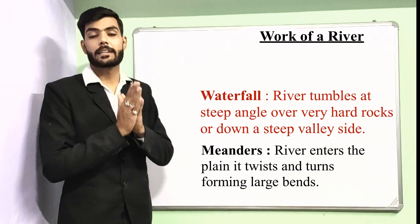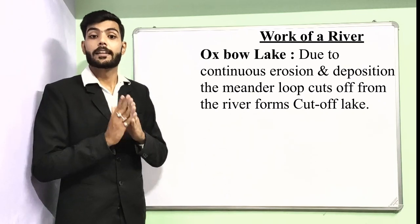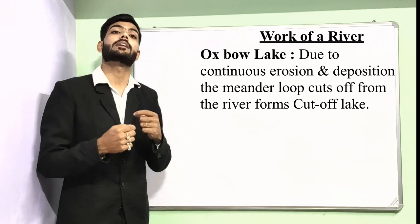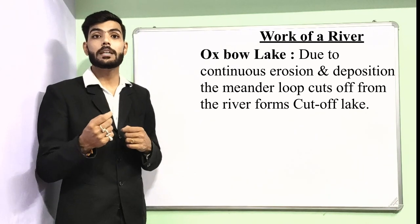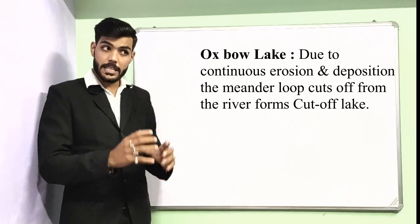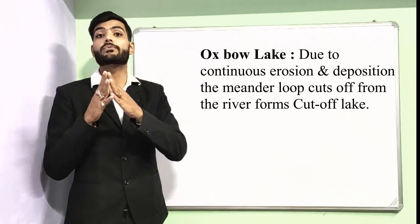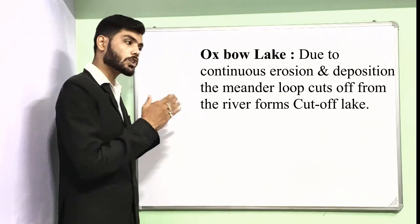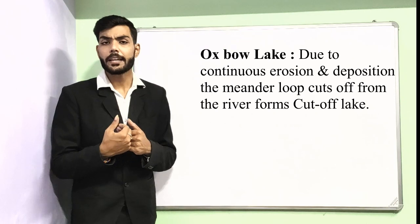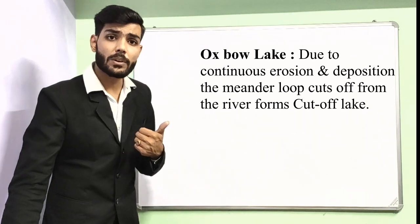An oxbow lake is formed due to the continuous erosion and deposition of the meander loop, which cuts off from the river. As it cuts off, it forms a kind of cut-off lake, which is why the oxbow lake is also known as a cut-off lake. It is called a lake because it consists of fresh water.